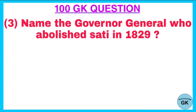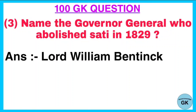Question. Name the governor general who abolished Sati in 1829. Answer. Lord William Bentink.